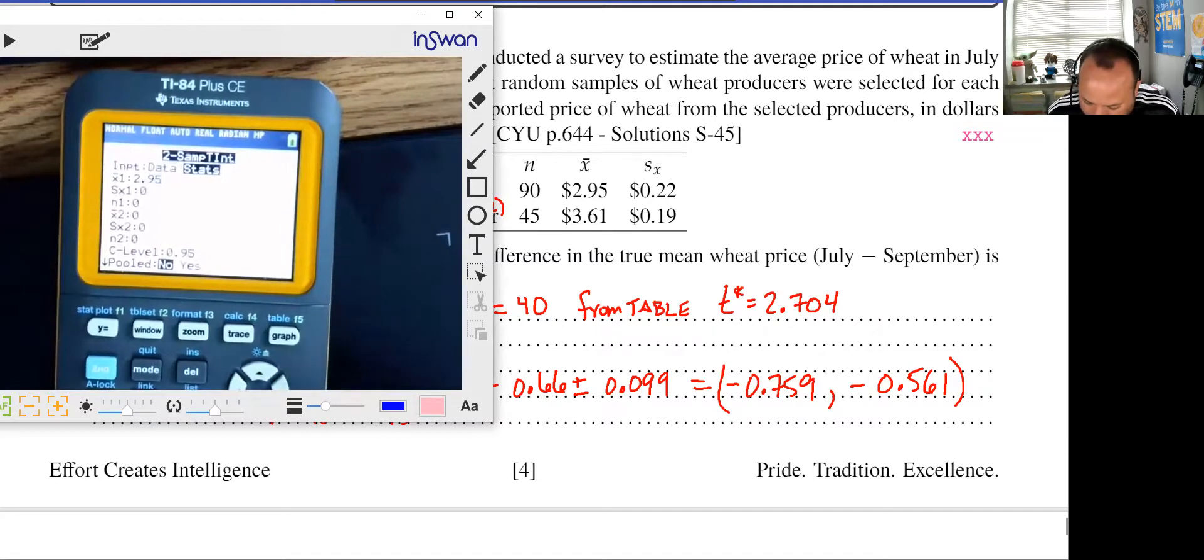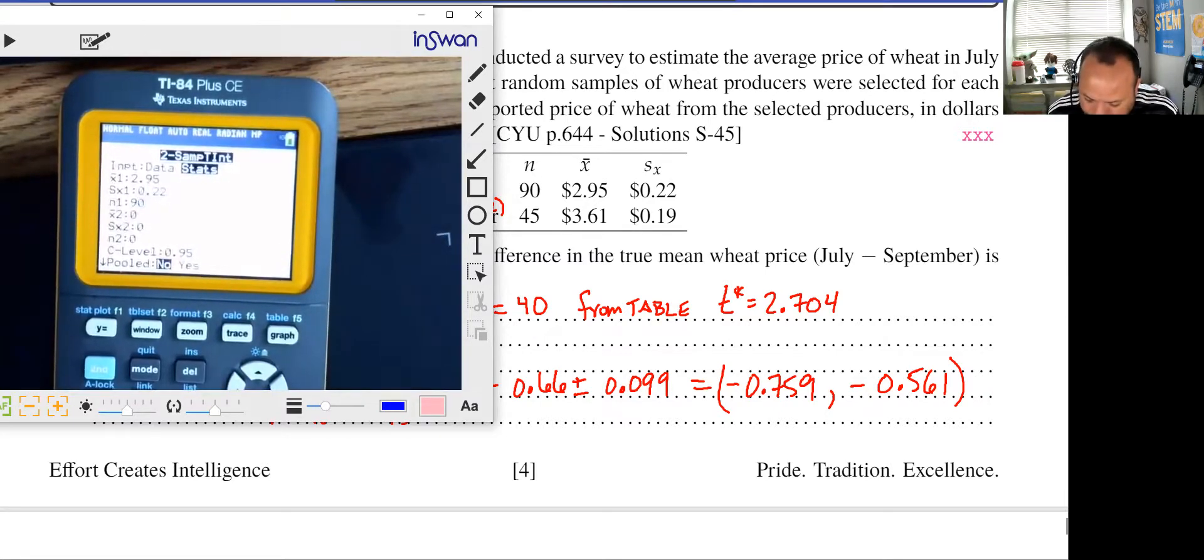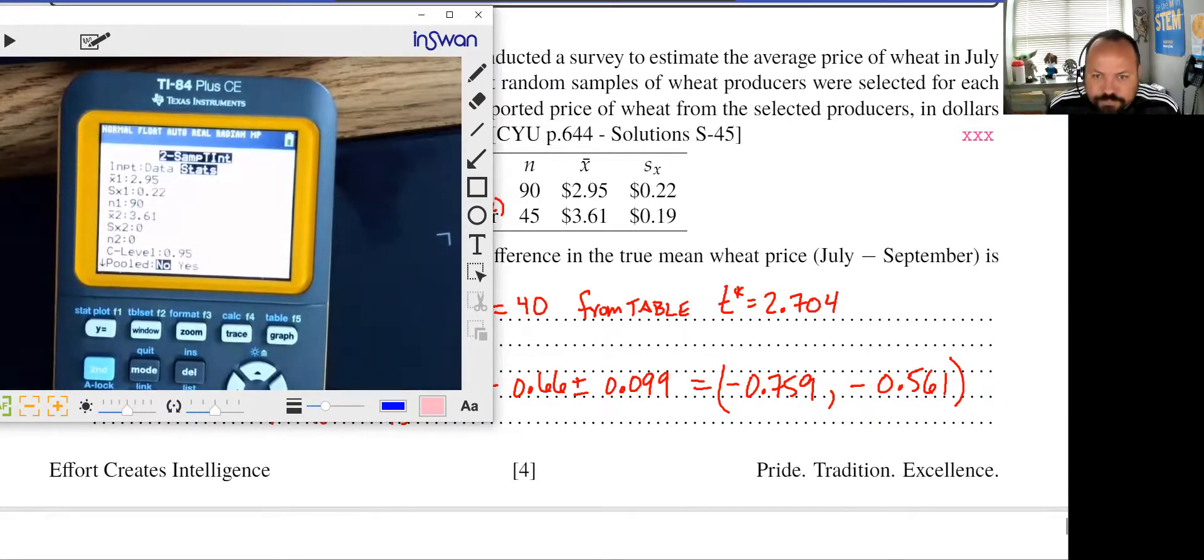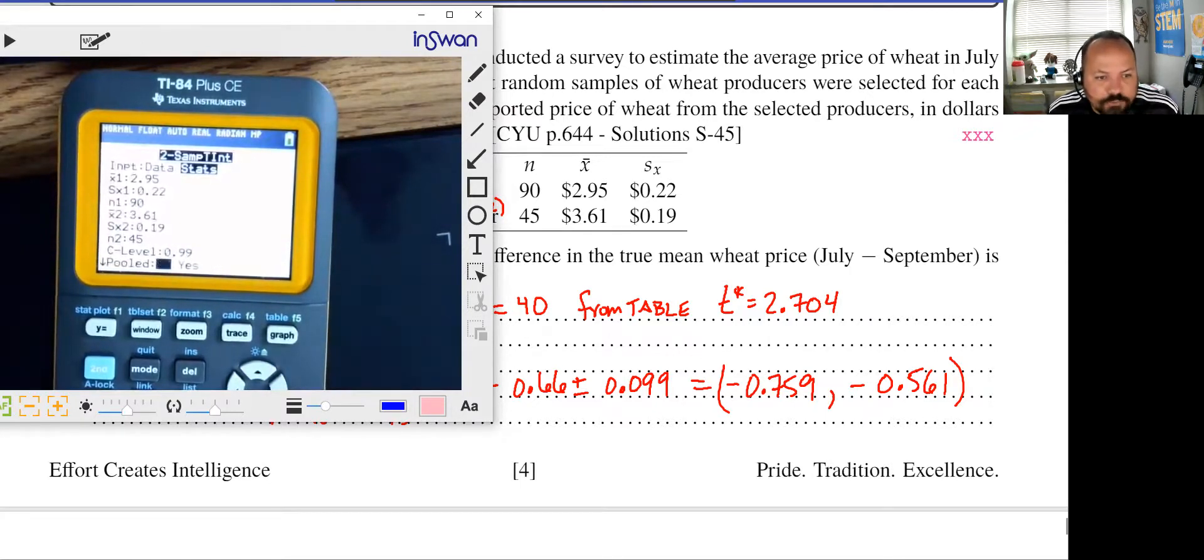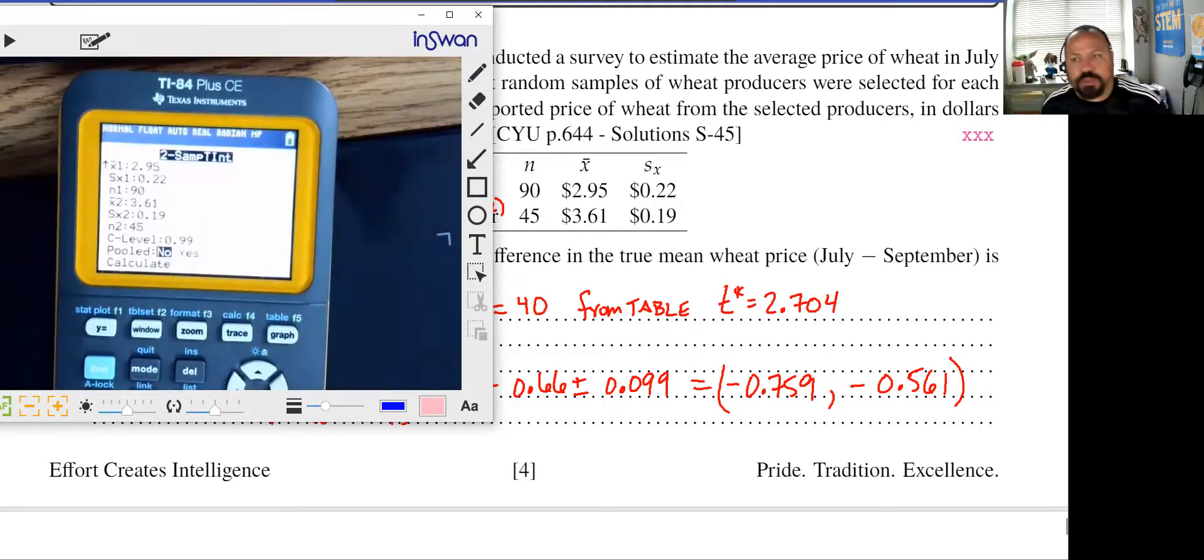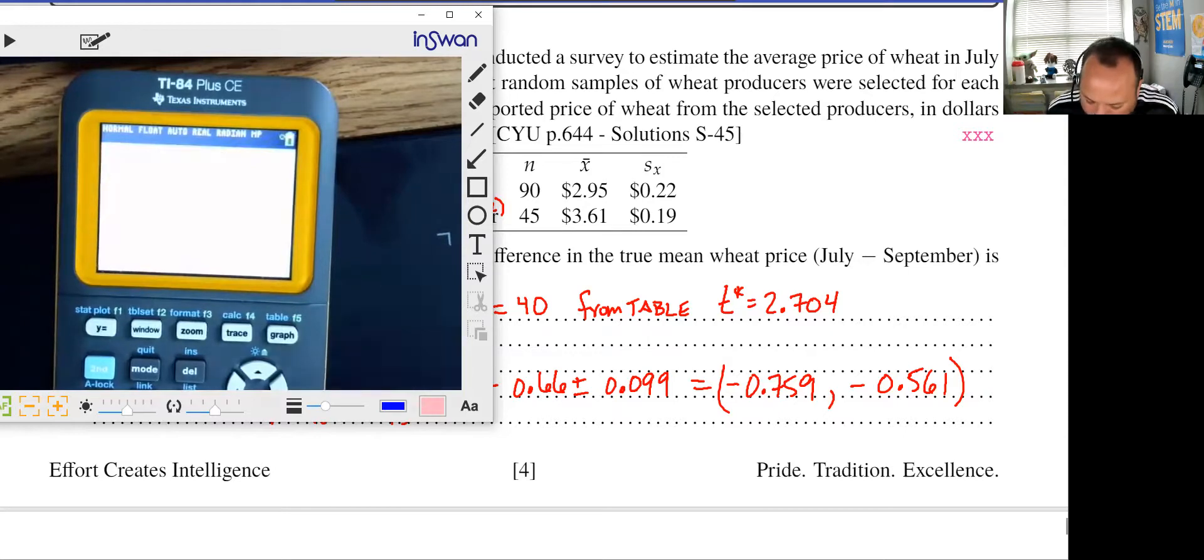x bar one, that was 2.95. Standard deviation one, that was 0.22. Sample size one, that was 90. X bar two, that was 3.61. Standard deviation two, that was 0.19. Sample size two, that was 45. Confidence level 0.99. Never pool because we are not assuming that our standard deviations for our populations are the same. And then we'll calculate.